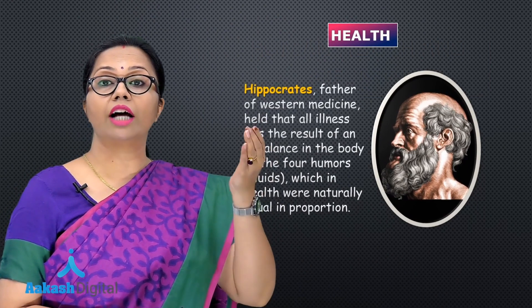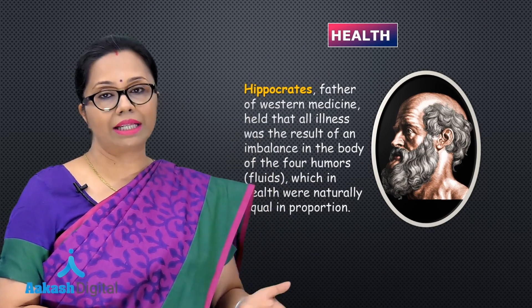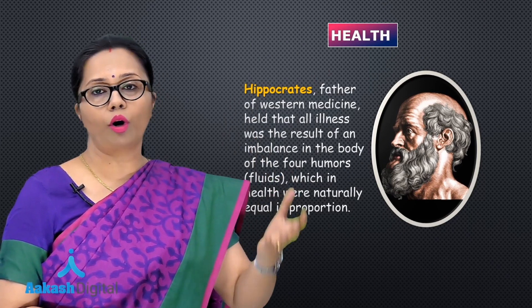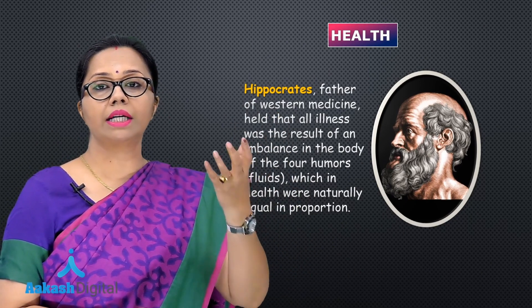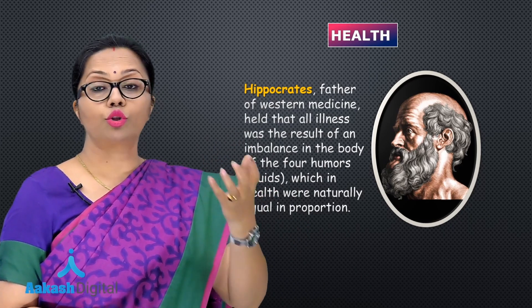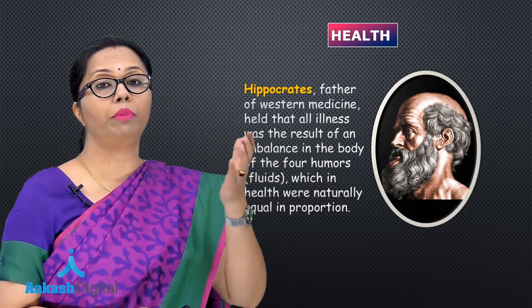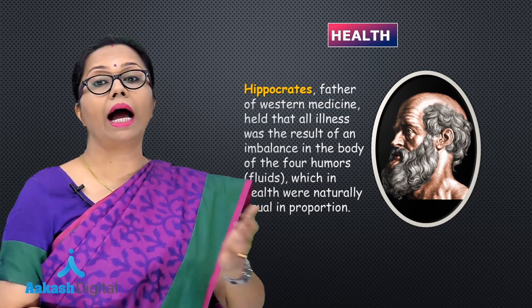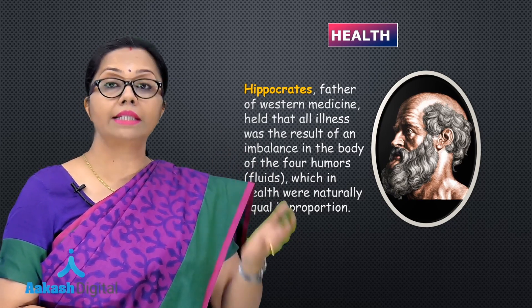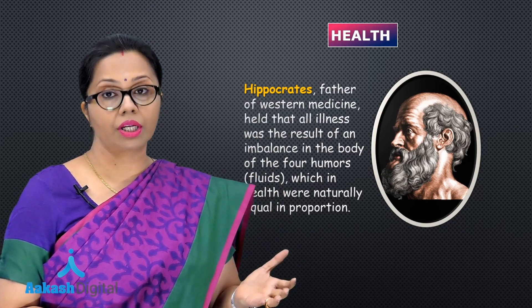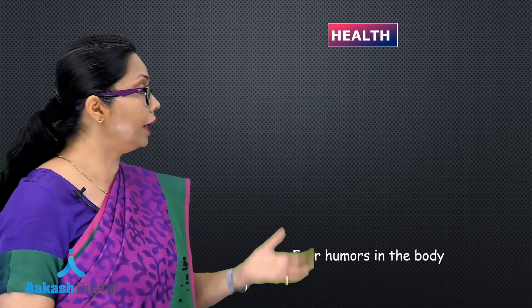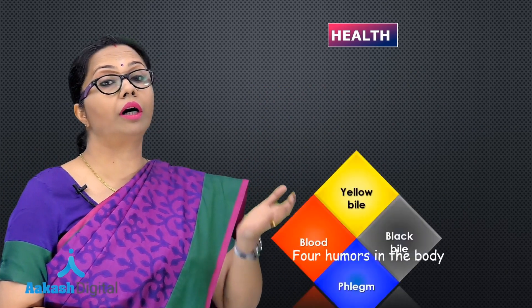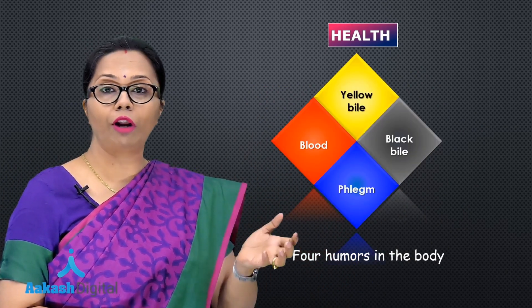If we talk about earlier times, according to Hippocrates — who is considered the father of modern western medicine — within the body there are four humors. 'Humors' is a Greek term for fluids. So there are four fluids in the body and those fluids have to be maintained in balance for proper health. If one or the other fluid is imbalanced, that brings in illness. According to this theory, the four humors were yellow bile, black bile, phlegm, and blood.